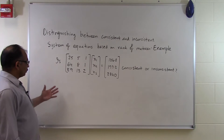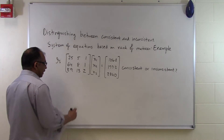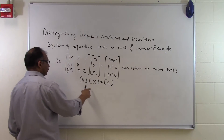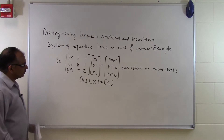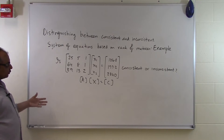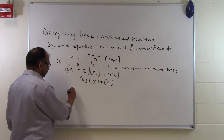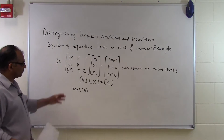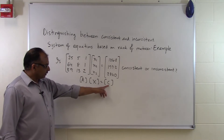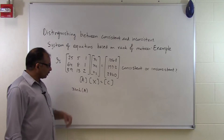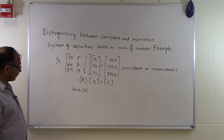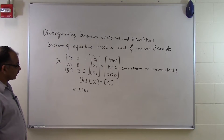The first thing we have to do is write it down in symbolic form. This is A times X equals C, where A is the coefficient matrix, X is the solution vector, and C is the right-hand side vector. We need to find the rank of A and the rank of the augmented matrix — with C as the fourth column attached to A — and see if the two ranks are the same. If they are the same, it is consistent. If the rank of A is less than the rank of the augmented matrix, then it is inconsistent.